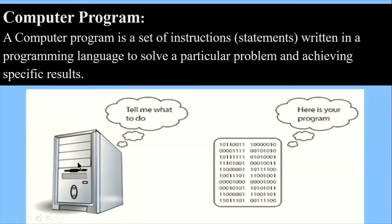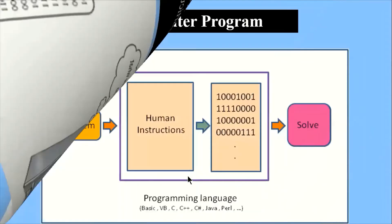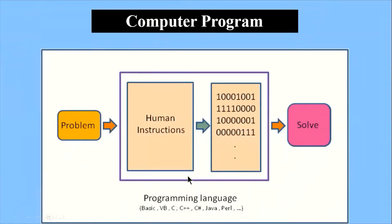As we can see in this diagram, for example, suppose there's a computer and it is asking 'tell me what to do,' and you are giving instructions in the form of different code. So here is your program. It means that a computer program is a set of instructions that tell the computer what to do, when to do, and how to do.